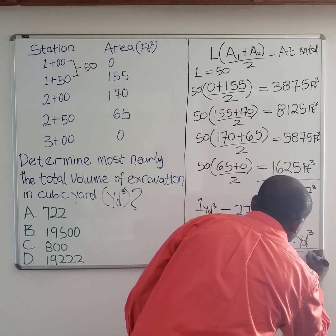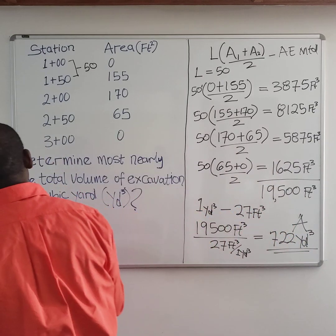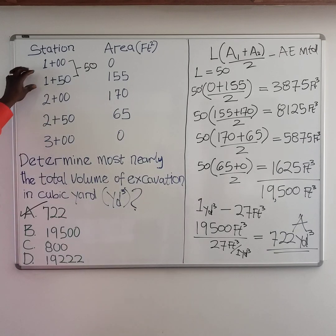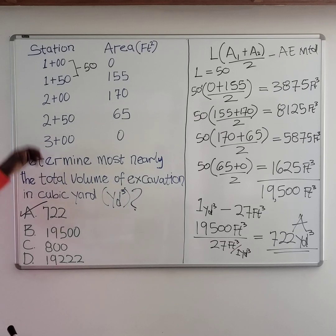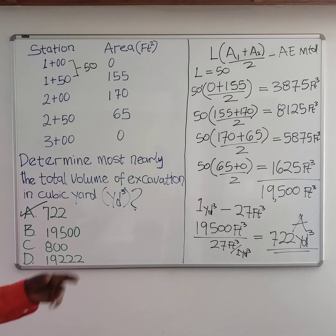That's your answer, and answer A is correct. So that's the average end method — it's very straightforward. Identify the length between stations; typically they'll be equal. If they are not, do the equal sections separately, then handle the different sections separately, add them all together to get your final value. Thank you for joining us.